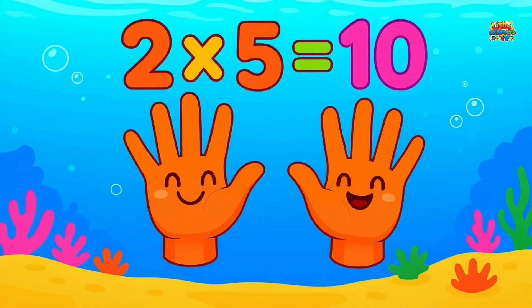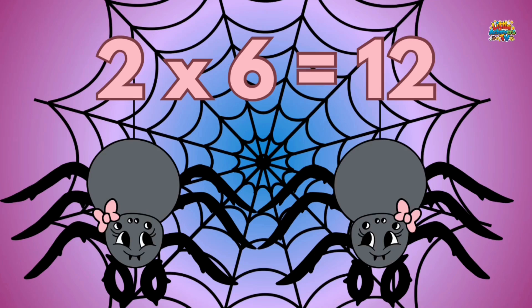Two times five equals ten. Two hands, each with five fingers, make ten fingers. Two times six equals twelve. Two spiders, six legs each, make twelve legs.